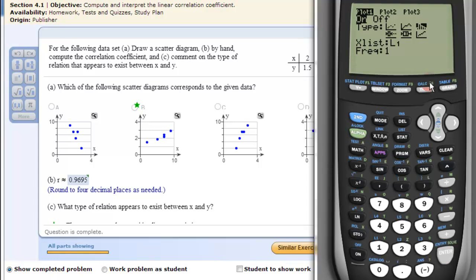turn it on and then the scatter plot is right here. Enter, enter, down, make sure this says list 1, list 2.